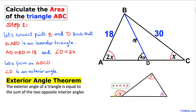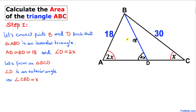In this illustration, angle x is an exterior angle equal to the sum of opposite interior angles alpha and beta. Applying this theorem to our problem, the sum of the two interior angles of triangle BCD must equal the exterior angle 2x.